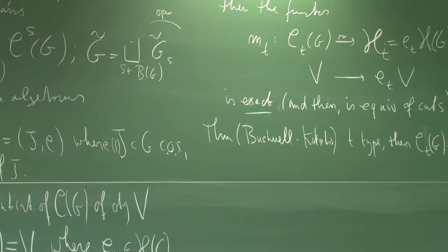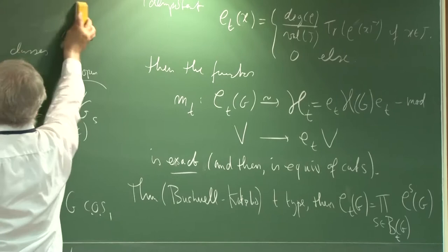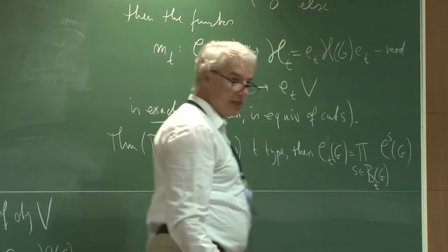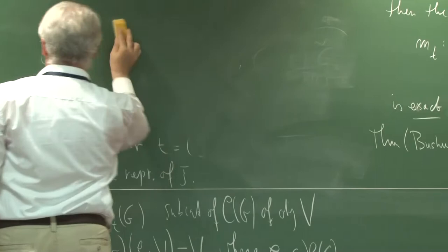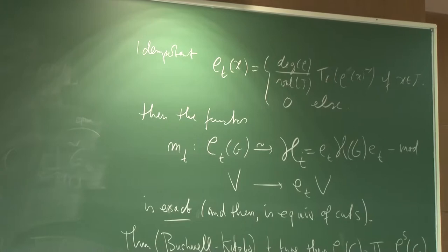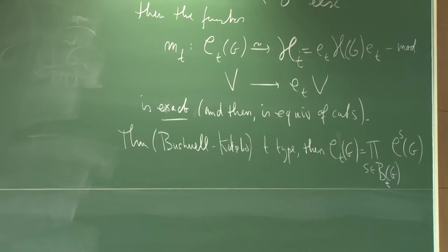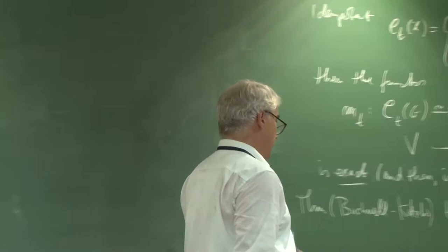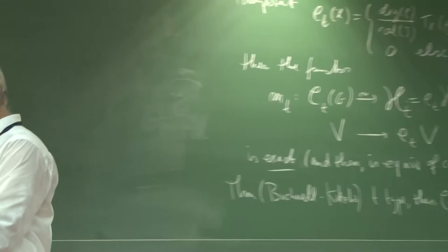The point is that if the type is such that it corresponds to a single Bernstein component — a singleton — then this algebra will be very close to what we know as an affine Hecke algebra. In fact in the relevant case we are discussing — unipotent representations — it will be on the nose an affine Hecke algebra.